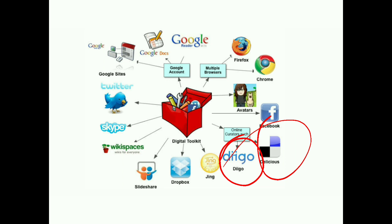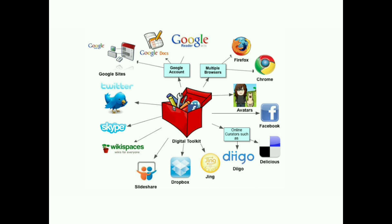The next one is Delicious. Delicious is a social bookmarking web service for storing, sharing, and discovering web bookmarks. This site was founded by Joshua Schachter and Peter Gadjokov in 2003 and was later acquired by Yahoo, which of course you have all heard about.